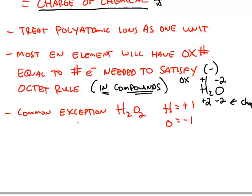A common exception is hydrogen peroxide. In this compound, oxygen is assigned an oxidation number of negative 1. The total charge of those two oxygen atoms is negative 2. The total charge of the two hydrogens will be positive 2, so hydrogen is its normal positive 1 in hydrogen peroxide.